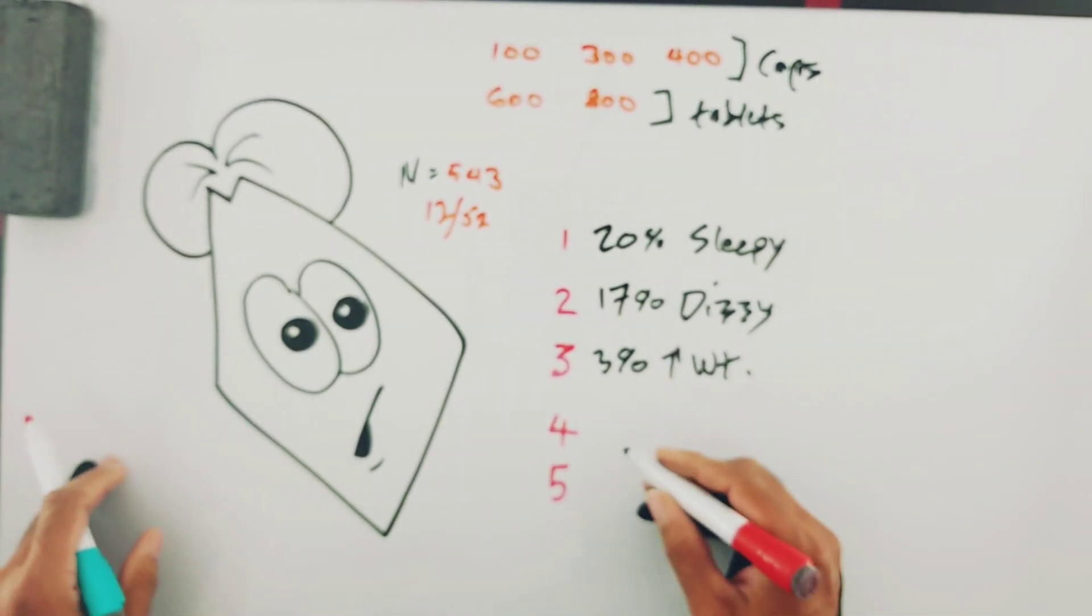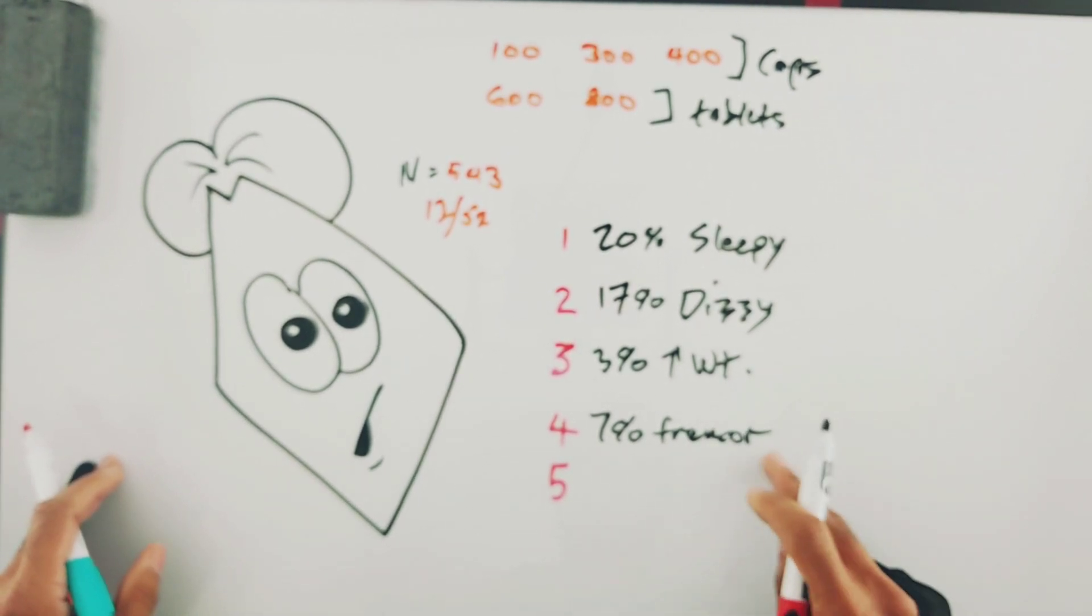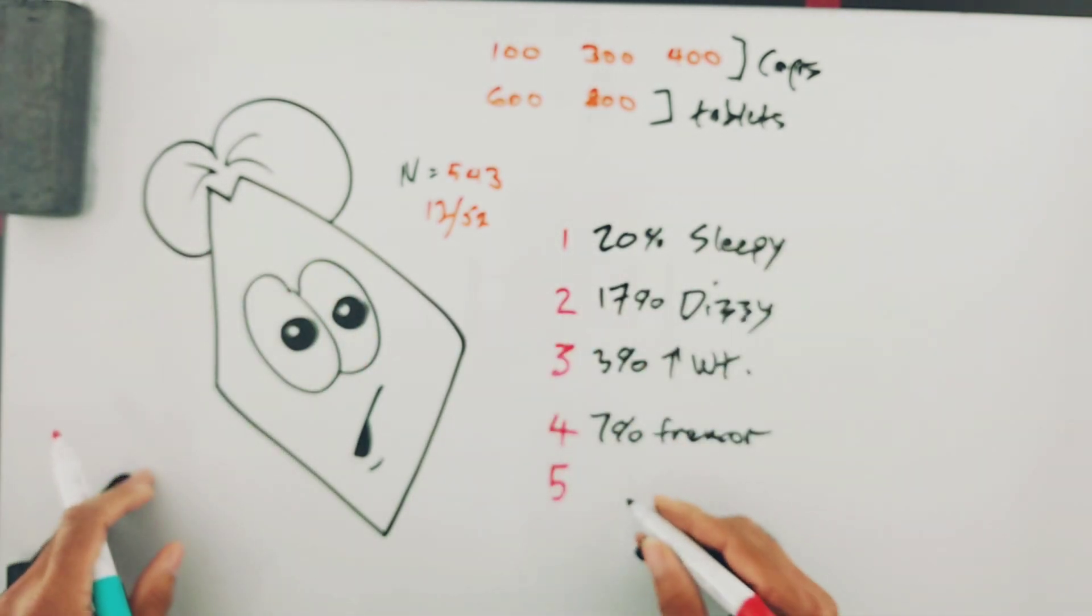All right, next one is a tremor, so like shaky hands. Which seems a little odd considering it's meant to squelch excessive nervous turmoil, so you would think it would reduce tremor, not increase it.